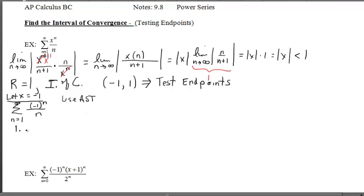So the two parts of the test. Number one, let's look at the absolute value of the nth term. So what's the limit as n goes to infinity of 1 over n? Well, that's zero. And that's the first part of the test, and that checks. That has to be true.